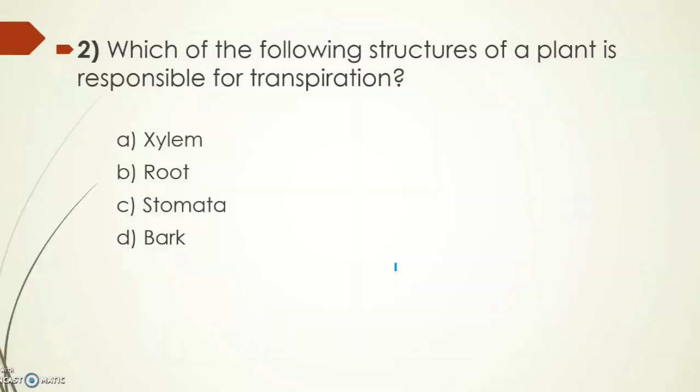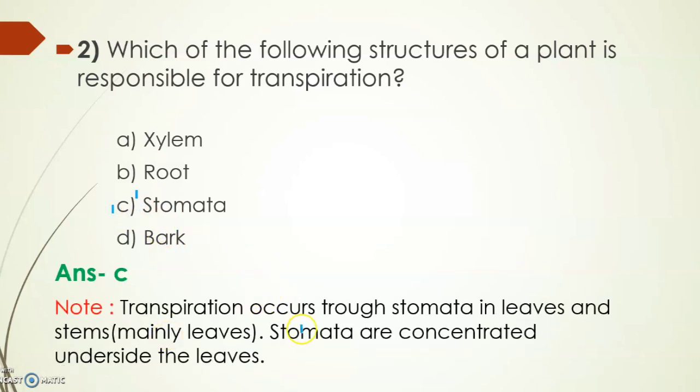Next one: which of the following structures of a plant is responsible for transpiration? The options are xylem, root, stomata, and bark. It's too simple, its answer is option C, stomata. Note: transpiration occurs through stomata in leaves and stem, mainly through leaves. Transpiration is the exchange of gases and water through leaves. Leaves contain stomata which are concentrated towards the underside of the leaves, more concentrated on the lower side compared to the upper side.